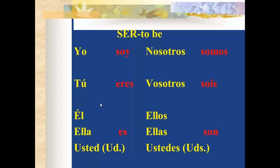So let's review the forms of the verb ser: soy, eres, es, somos, sois, son — meaning I am, you are, he/she is, we are, y'all are, they are.